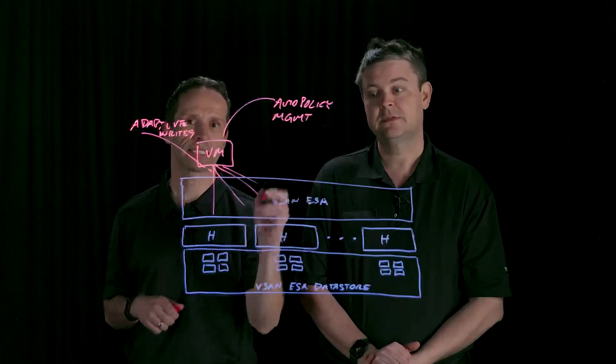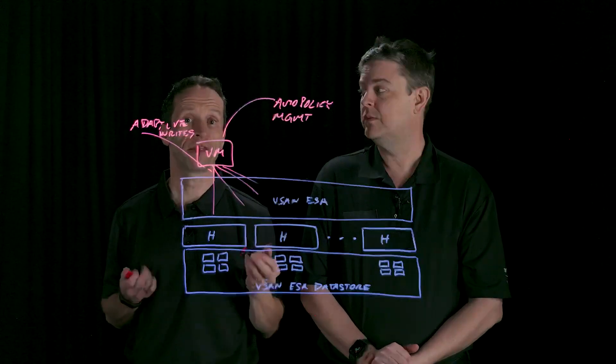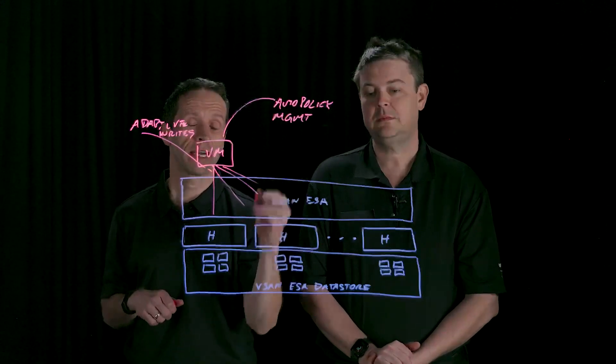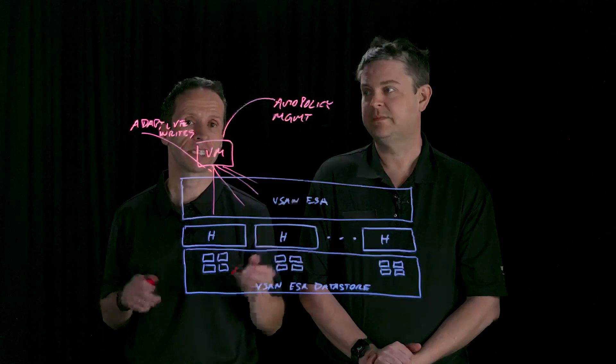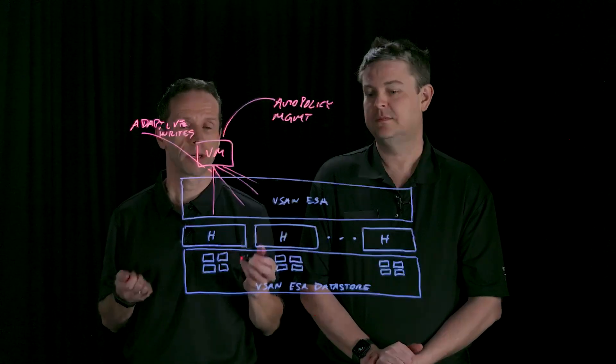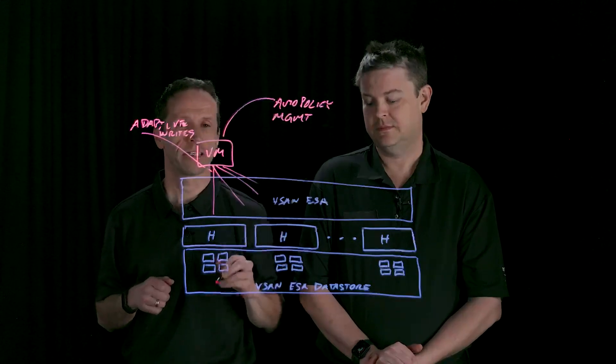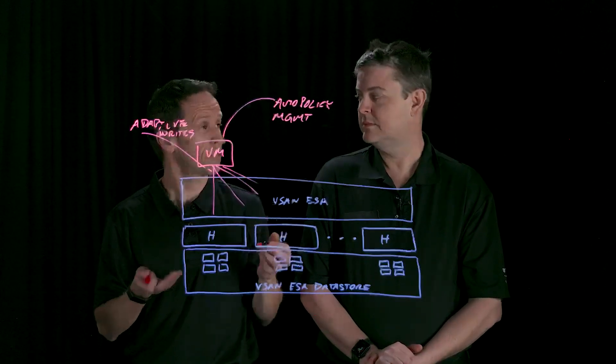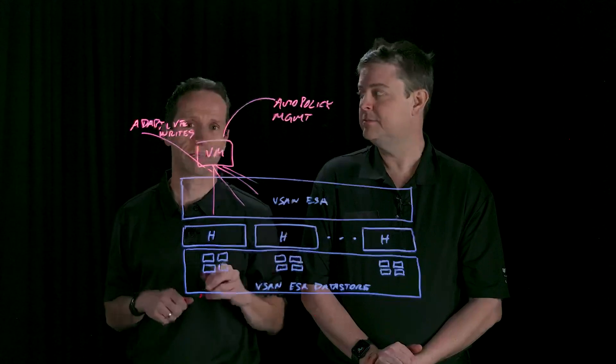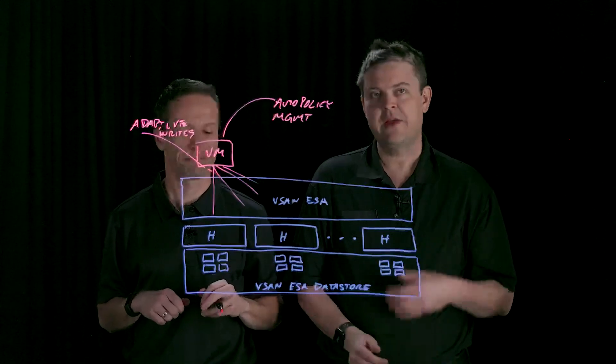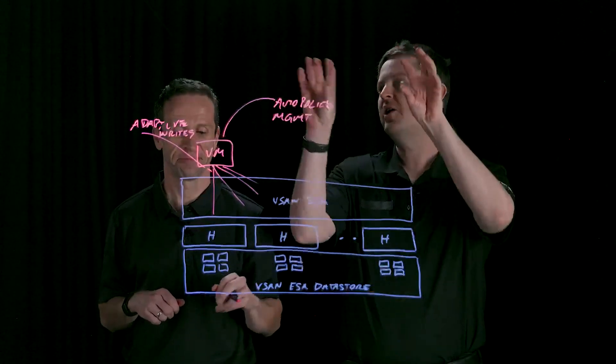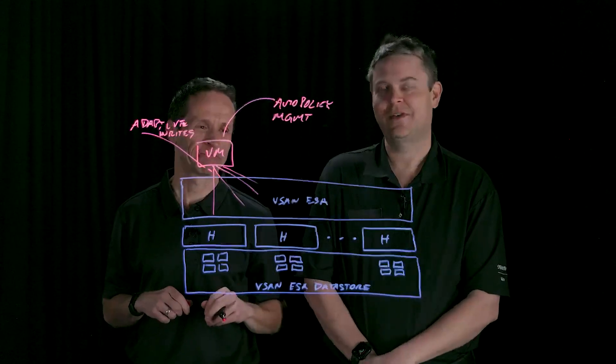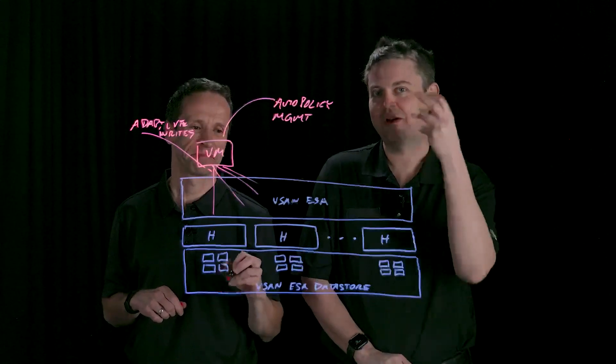And because ESA is so efficient, we generally use about one third of the resources to process each and every IO. That means that we've been able to increase the number of VMs per host from 200 up to 500 VMs per host. Now, is that a great option for you? Well, it really depends based on your conditions. And the other thing is I'm going to need you to draw 500 little boxes here.